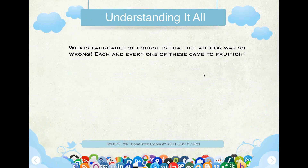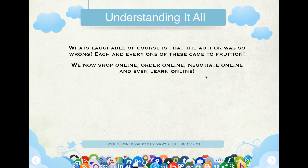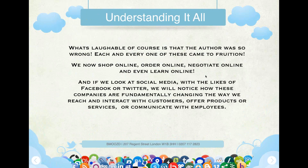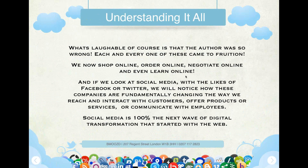The author was so wrong. Each and every one of those predictions came to fruition. We now shop online, order online, negotiate online, and even learn online. And if we look at social media with the likes of Facebook or Twitter, we notice how these companies are fundamentally changing the way we reach and interact with customers, offer products or services, and communicate with employees. Social media is 100% the next wave of digital transformation that started with the web.